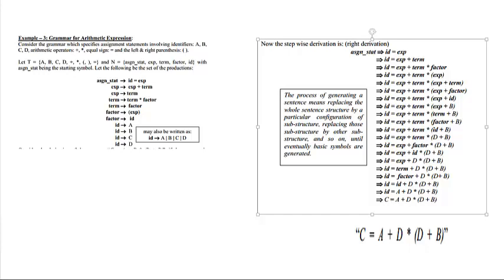In this tutorial we are going to solve an example for grammar for arithmetic expressions. Consider the grammar which specifies an assignment statement involving identifiers A, B, C, D, arithmetic operators plus and multiplication, equal sign, and left and right parentheses. T is equal to A, B, C, D, plus, multiplication, parentheses, equal sign. The grammar includes assignment statement, expression, term, and factor.